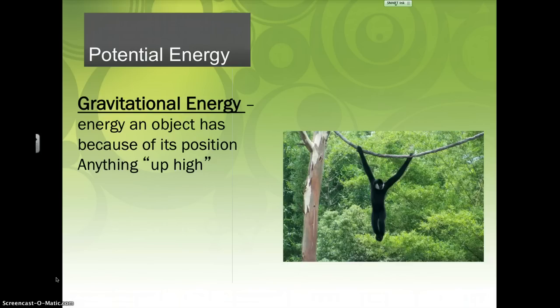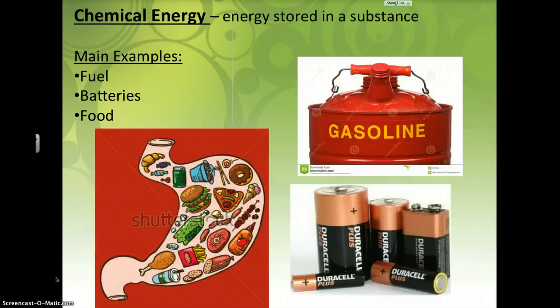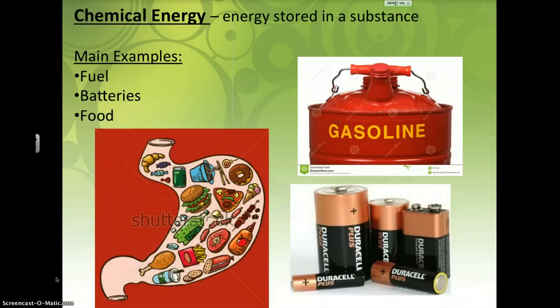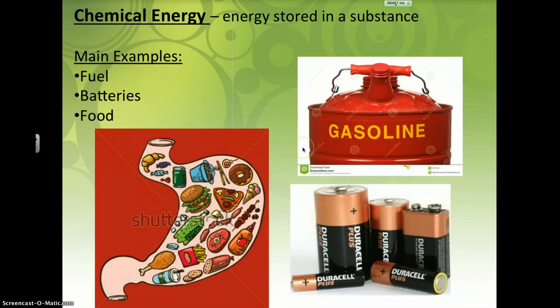The other type of potential energy is new — chemical energy. This is another form of potential energy because it's not actually creating energy right then, but it has the potential to create energy. On the screen you see some pictures of what I consider the three main examples of chemical potential energy. If you look at the can of gasoline, it just sits there not doing much, but if you light a match to it, it has potential to explode and catch on fire, which would create a tremendous amount of energy.